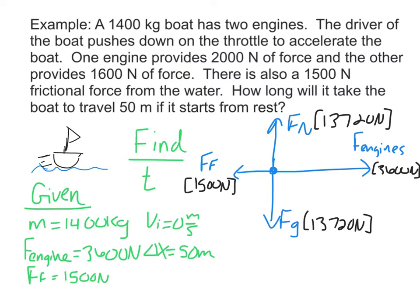Net force is equal to top minus bottom or right minus left. So in this case, since there's no acceleration here, we need to use the horizontal. So from this force diagram, Fnet is going to equal the force of the engines minus the frictional force. So this is equal to 3600 newtons minus 1500 newtons. Fnet equals 2100 newtons.